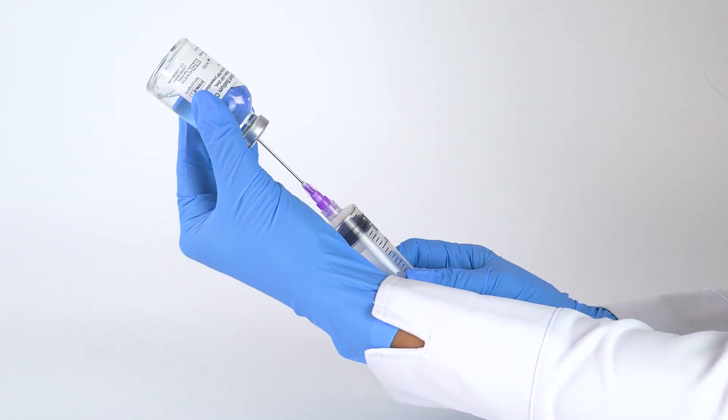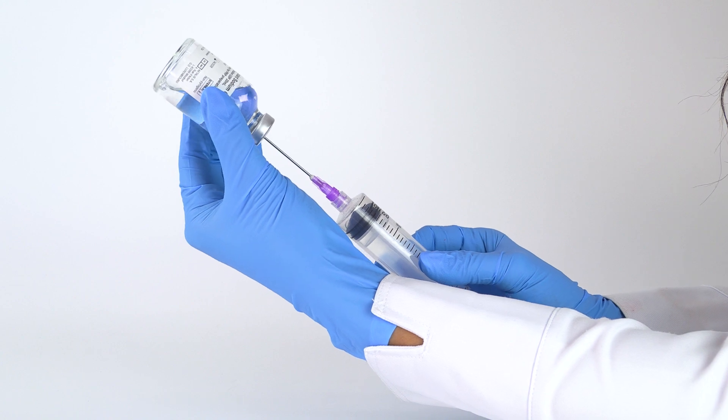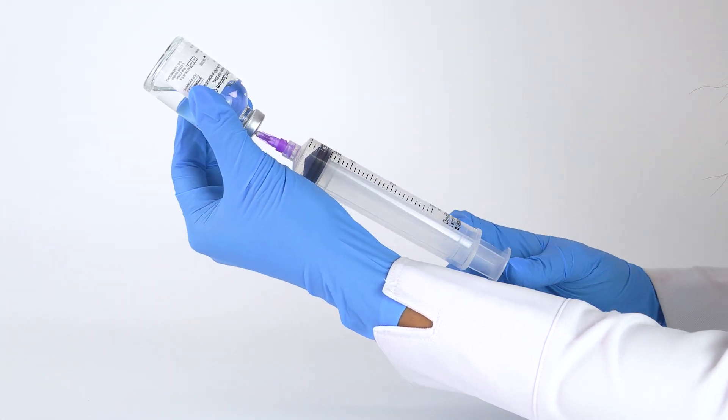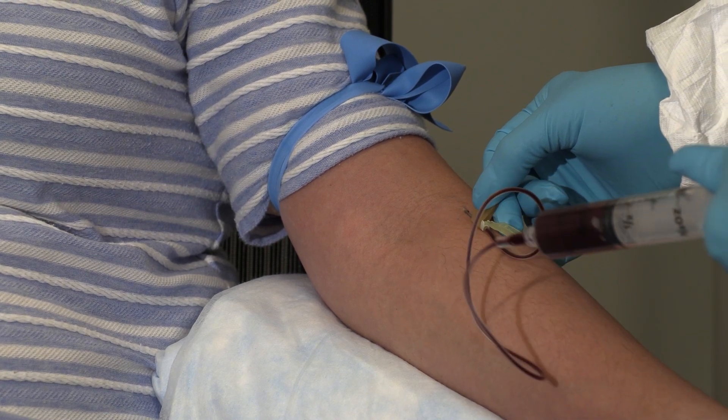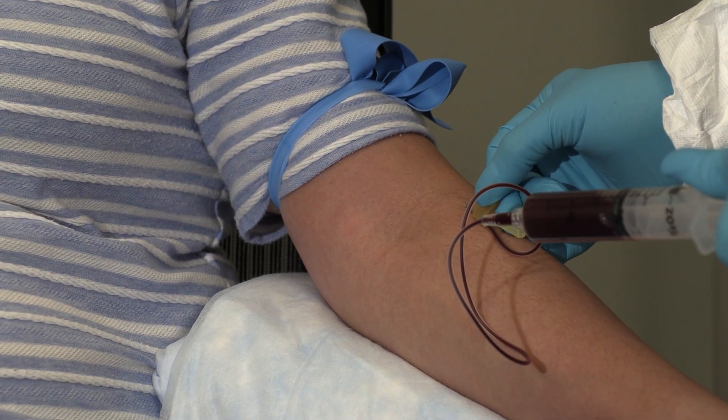Fill a 30 milliliter sterile syringe with 3 milliliters of citrate anticoagulant. Then draw 27 milliliters of blood from the patient, filling the syringe to 30 milliliters.